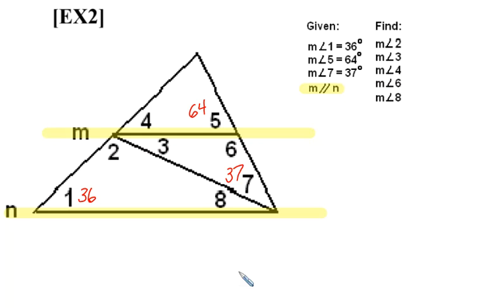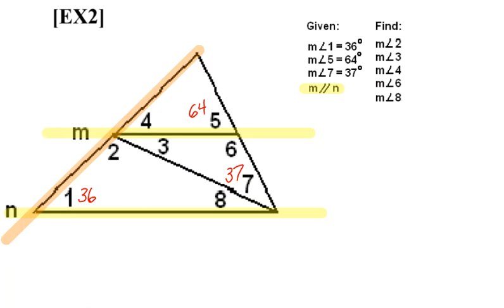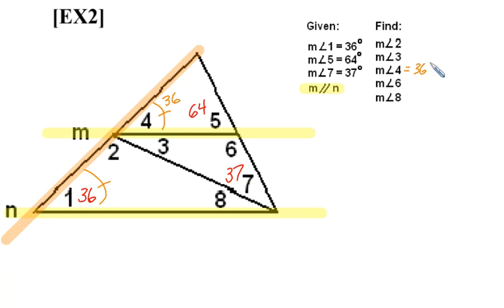First, we could use the left-hand side of the triangle as a transversal — we've colored that in orange on the screen. Looking at that orange line as a transversal, the corresponding angles it forms with lines M and N must be congruent, since those lines M and N are parallel. Therefore, the measure of angle 4 must be 36 degrees.